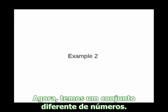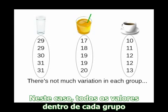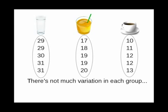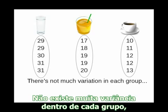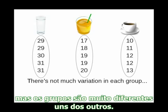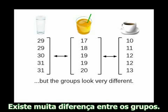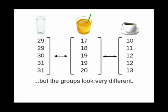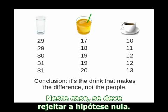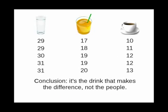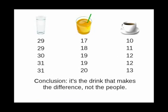Now let's look at a different set of numbers. In this case, all the scores within each group are very close to one another — there's not a lot of variance within each group. But the groups are very different from one another; there's a lot of difference between the groups. In this case, you would reject the null hypothesis. The type of drink makes a big difference.